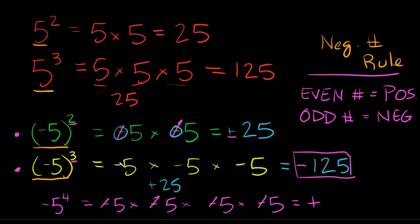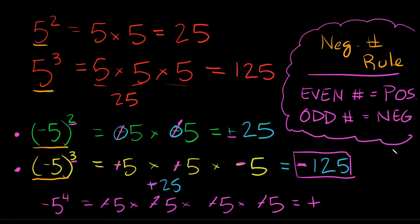When we have an odd number as our exponent, our answer is going to be negative, because there's always going to be one leftover negative sign. In the negative 5 cubed example, one pair of negative signs canceled out giving positive 25, but we still had one negative sign left over — and a positive times a negative is a negative. This is a useful rule to write down or memorize. Remember, this rule is specifically for negative bases — not negative exponents. That's a very important distinction.